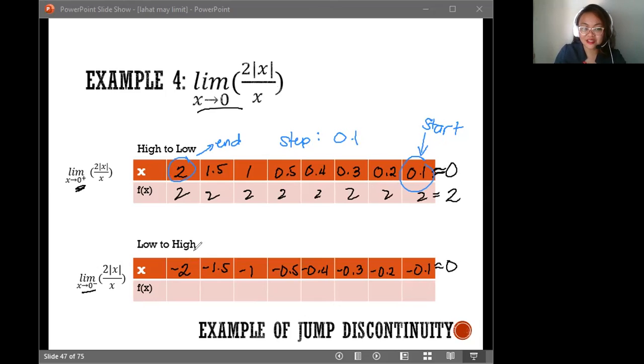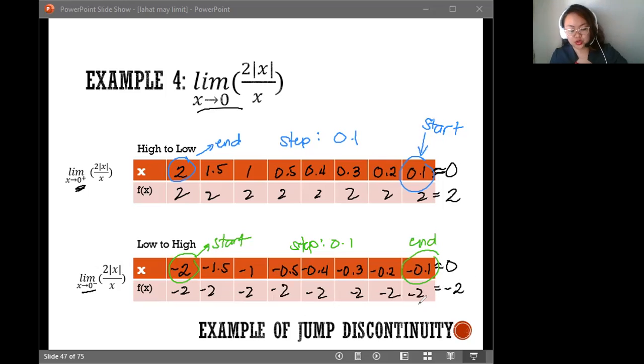But how about the other table? Let's look at the values that you will get from the other table. This is where you start. Negative 2 because negative 2 is lower than negative 0.1 because these are negative numbers. And then your step is still at 0.1. And what value will you get? So you'll get negative 2, ladies and gentlemen. The value that you will get from this function is negative 2.